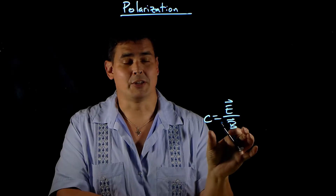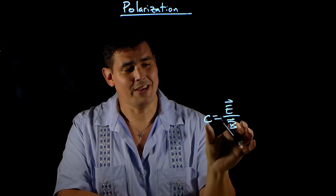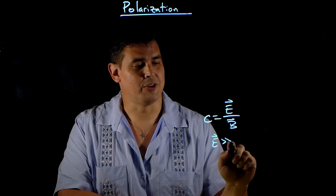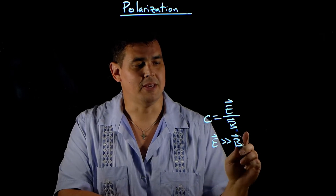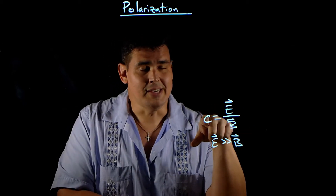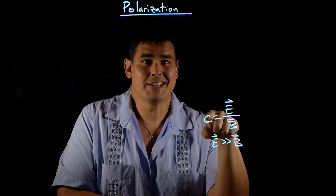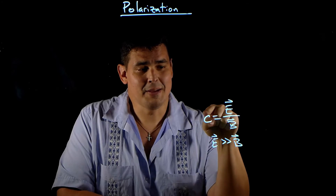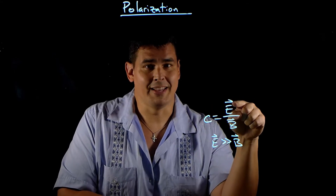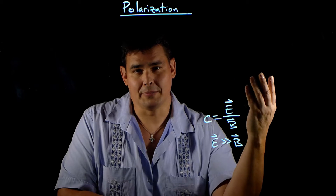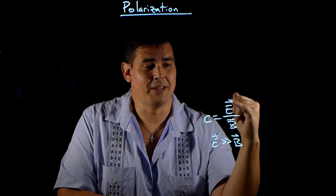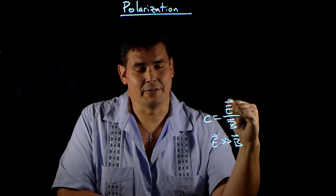We talked about electromagnetic waves. Looking at this, we can reason that the electric field magnitude must be much greater than the magnetic field magnitude. The reason for this is c, the speed of light, is 3 times 10 to the 8th. In order for that number to be humongous, the numerator has to be a lot bigger than the denominator. So because this is such a big number, we can tell the electric field component is going to be a lot bigger than the magnetic field component.